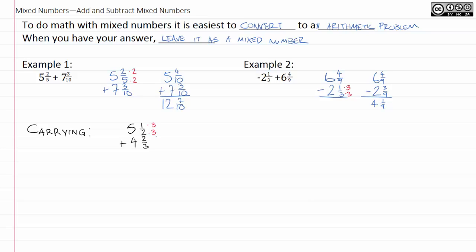I'll multiply the top and the bottom of this by 3. Multiply the top and the bottom of this by 2. And if I do that, I'm going to have 5 and 3 over 6 plus 4 and 4 over 6. Now, if I put these together, something happens that's a little strange.